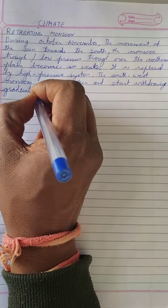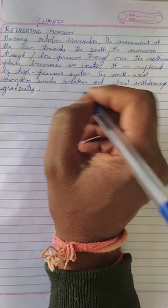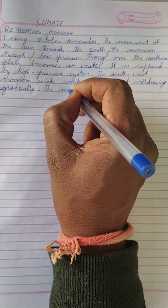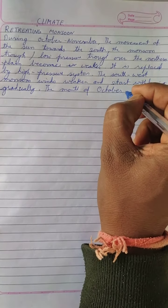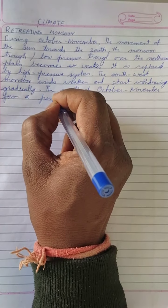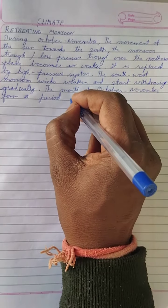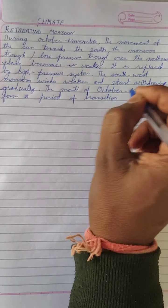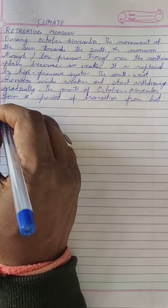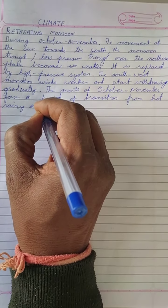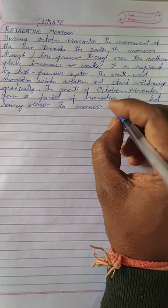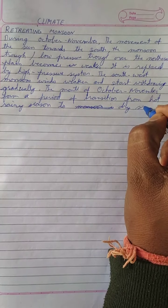The months of October and November form a period of transition, or retreating — from the hot rainy season to dry winter conditions.